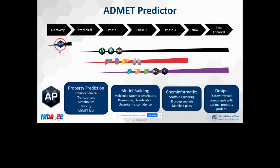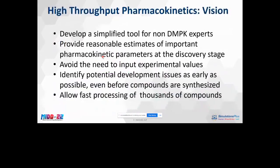Predictor is now well established in the discovery space, but we saw the need for a module to help bridge the gap between discovery and preclinical, where we already have well-regarded expert platforms like GastroPlus. Our vision was a simplified tool for non-DMPK experts — one that could provide reasonable estimates of important pharmacokinetic parameters at the discovery stage, avoid the need for experimental values which might not be available early on, identify potential development issues as early as possible, possibly even before compounds are synthesized, and allow fast processing of thousands of compounds.